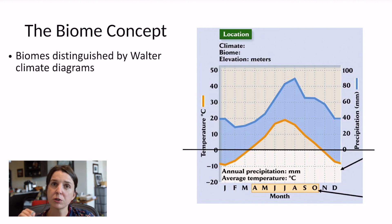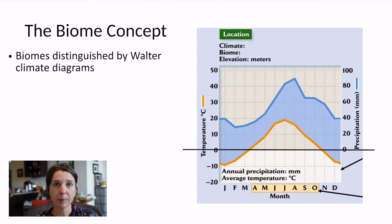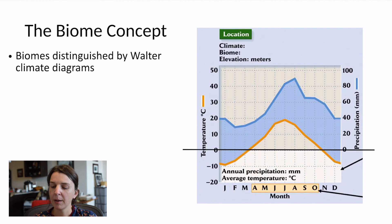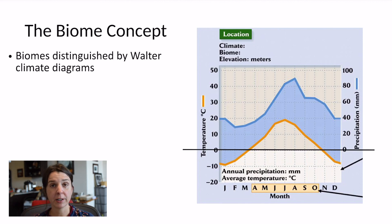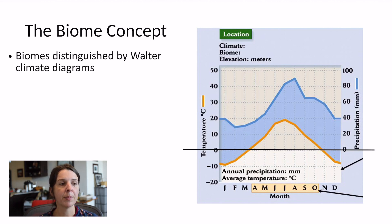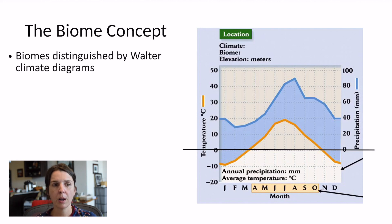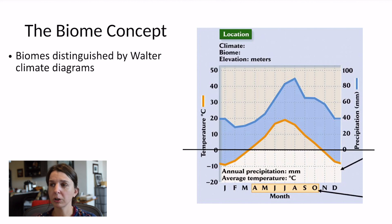We are now going to go through and talk about the major biomes on the planet — at least one way of categorizing the different biomes. It will differ slightly from how biomes are set out in your textbook, although mostly it's in agreement. As we go through these biomes, we are going to describe the climate using what is known as a Walter climate diagram. There's an example of one here on the right of your screen.